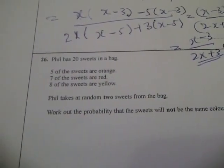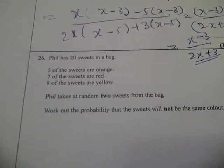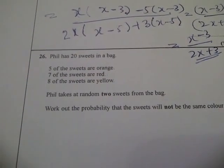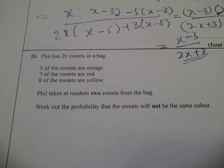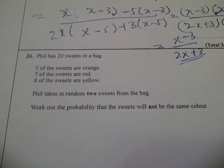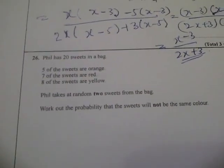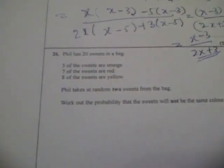Question number 26: Phil has 20 sweets in a bag. Five of the sweets are orange, seven of the sweets are red, eight of the sweets are yellow. Phil takes at random two sweets from the bag. Work out the probability that the sweets will not be the same color.